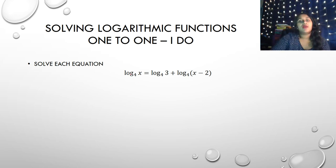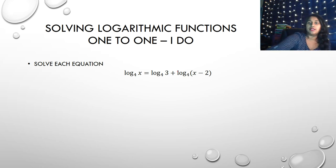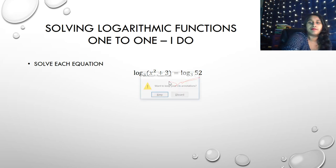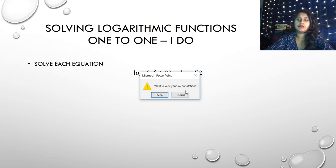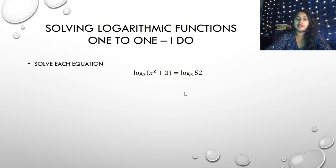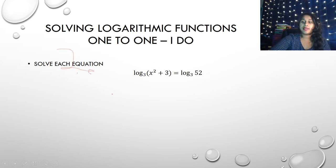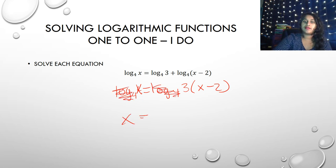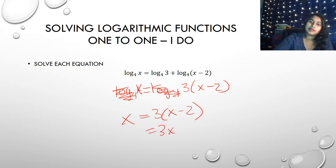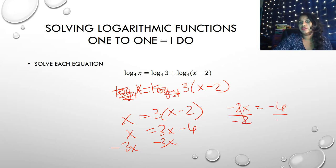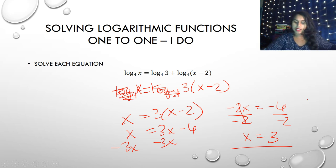For this one, I want to do a one-to-one because I have log base 4, log base 4, log base 4 — all the same base, so I'm already set up for success. However, I have a product rule I have to deal with in between. Using the product rule, that becomes log base 4 of (3 times (x − 2)), still equal to log base 4 of x. Now I have matching log bases, so I can cross them out, leaving x = 3(x − 2). Expanding gives x = 3x − 6. Subtracting 3x from both sides: −2x = −6. Dividing by −2: x = 3. Plugging that in confirms it is a true solution.